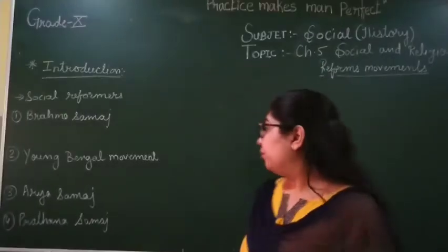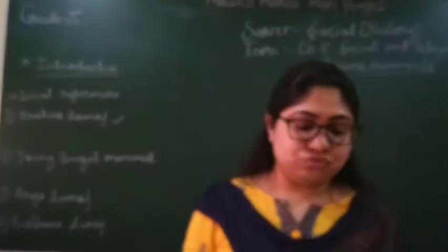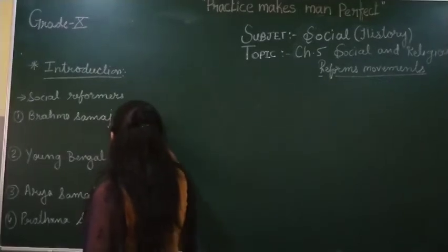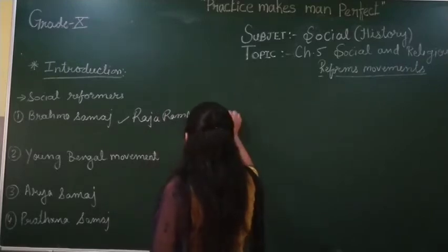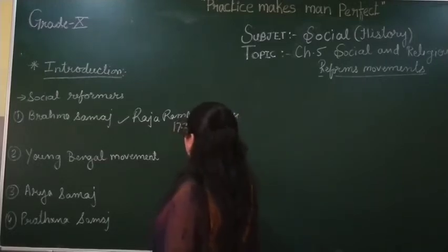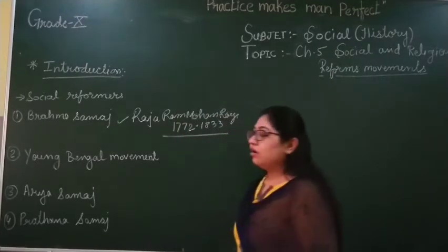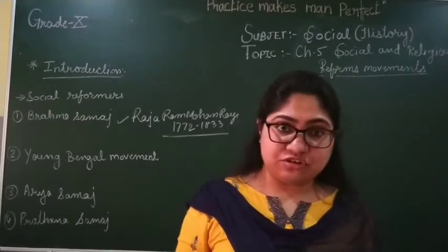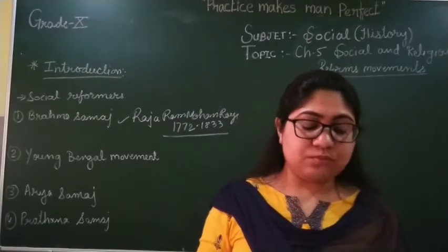First we talk about Brahma Samaj. It was started by Raja Ram Mohan Roy, who lived from 1772 to 1833. He was the chief pioneer of the social reform movement in India. He had deep knowledge of Sanskrit, Persian, and Arabic languages.